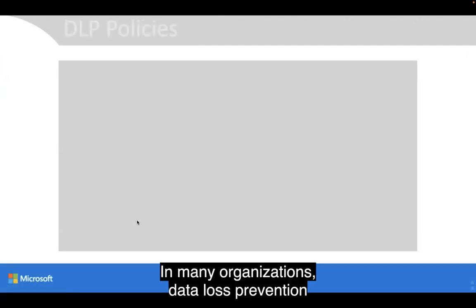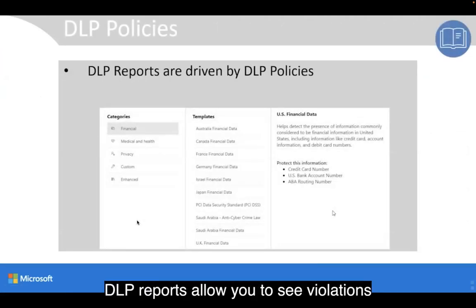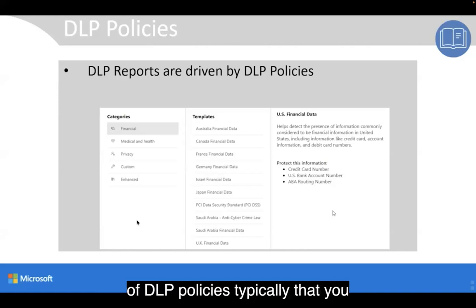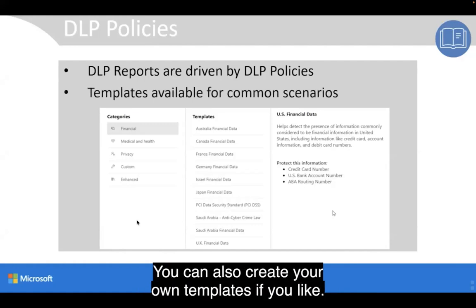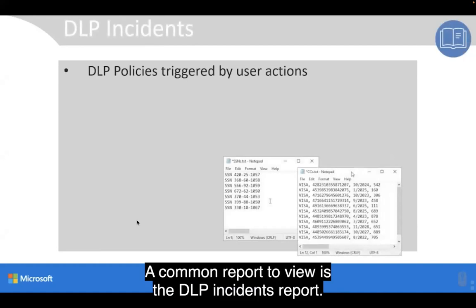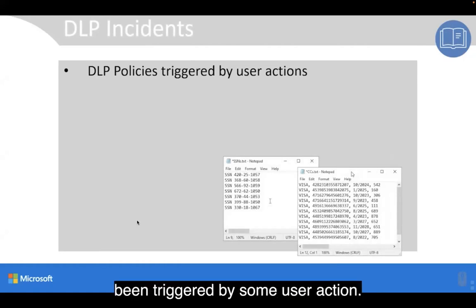In many organizations, data loss prevention is an important service. DLP reports allow you to see violations of DLP policies, typically that you or other admins have created based on templates — you can also create your own templates. A common report to view is the DLP incidents report. A DLP incident is something where a policy has been triggered by some user action.